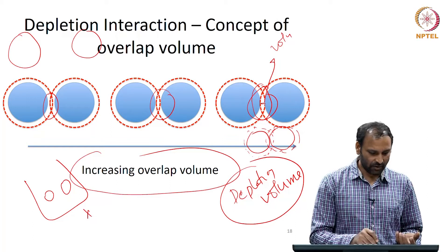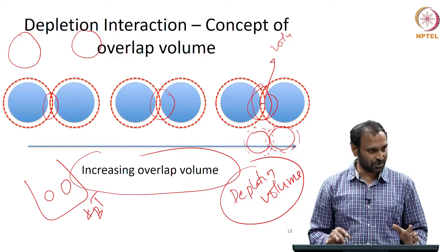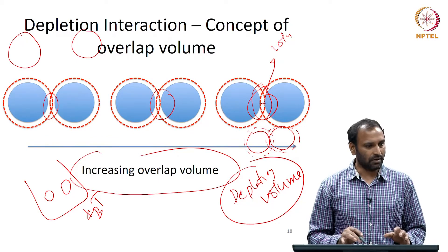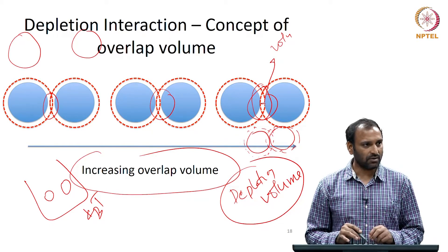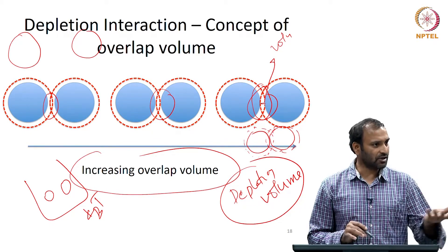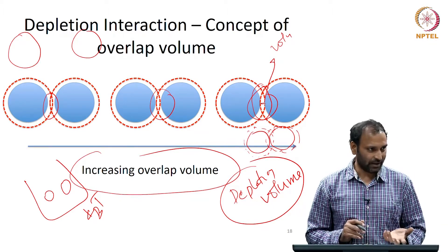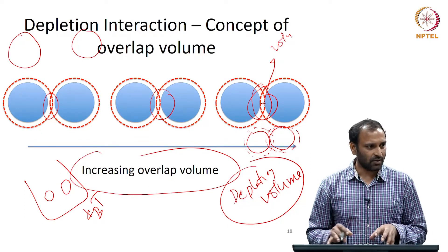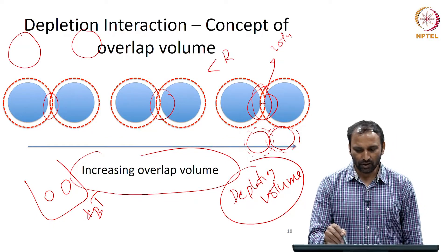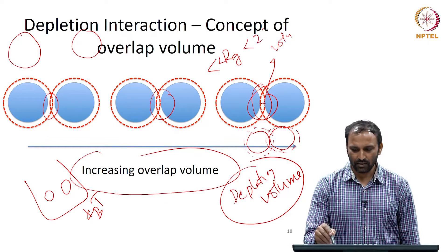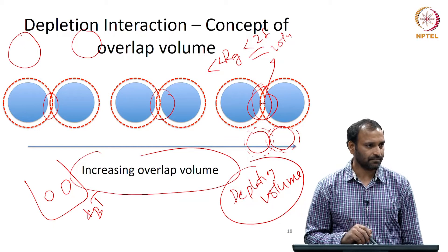Because the particles are free to move and have thermal energy, if it so happens that due to this chaotic motion the distance between the particles reduces — it depends on particle concentration and diffusivity — if the separation distance becomes smaller than 2 times rg or 2 times delta, that is when all the depletion effects will kick in.